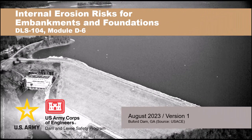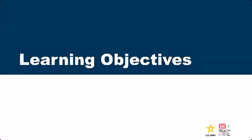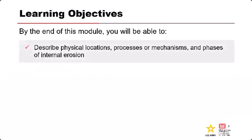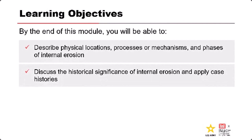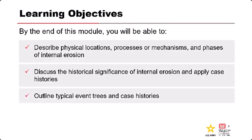I'm going to talk to you about internal erosion. There's a ton of information and I'm going to try to rip through a lot of things in the next hour. There is an entire week dedicated to internal erosion, but I'm going to cram a lot of that into an hour. Learning objectives: by the end of this module, you should be able to describe physical locations where internal erosion takes place in the foundation and embankment, the processes or mechanisms, and the phases of internal erosion — essentially the steps — as well as discuss the historical significance and case histories.